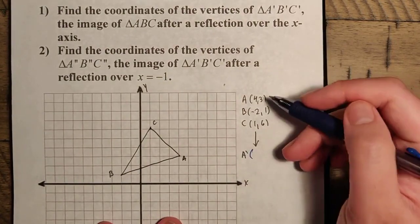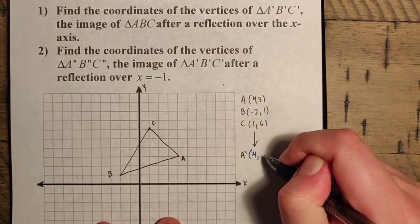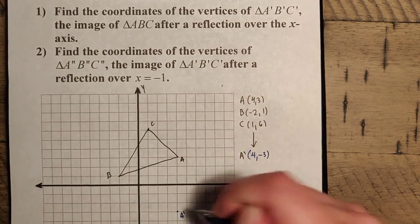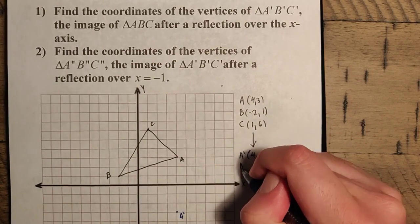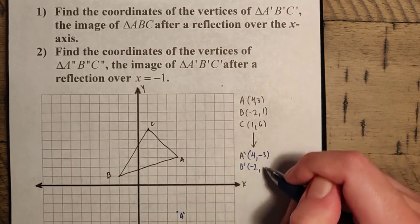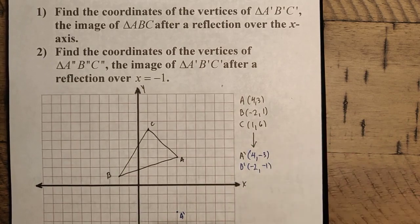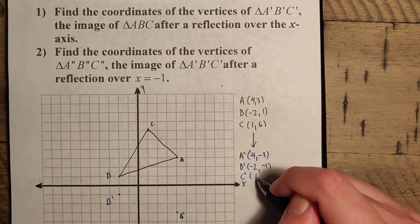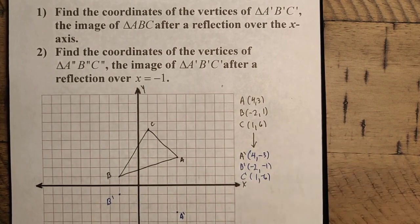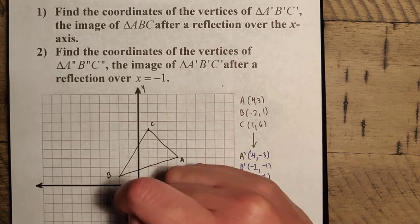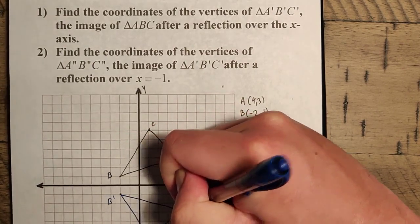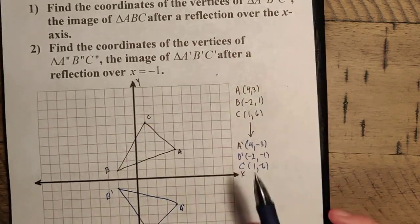So A' — the y-coordinate flips but the x remains the same — gives us 4, negative 3. I'll go ahead and sketch that. B' is going to be: negative 2 remains the same, but the 1 flips, so it becomes negative 2, negative 1. And C' is going to be 1, negative 6 — it flips down. Now our triangle is shown in blue, a nice-looking triangle. This is the reflection.